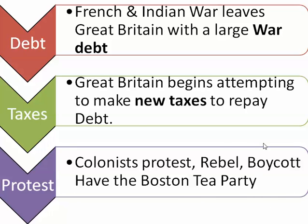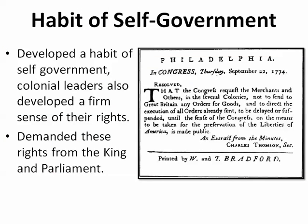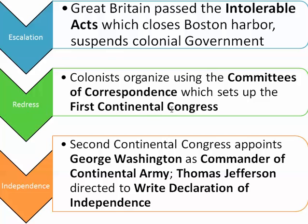We saw the Boston Tea Party, even the Boston Massacre, take place. Things escalated with the Intolerable Acts, which suspended colonial government. Suspending the town meetings in New England was a slap in the face for Americans who believed they had a right to self-government — a habit formed over the years. So the colonists formed committees of correspondence and Sons and Daughters of Liberty to resist what they felt was Great Britain's abuse of their rights.